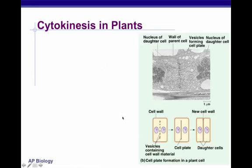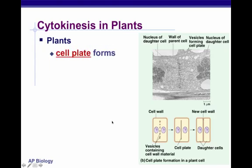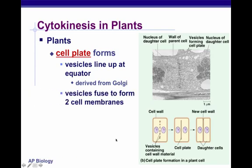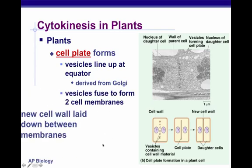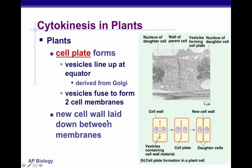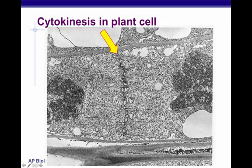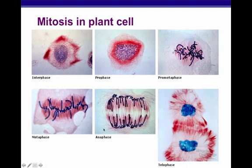Cytokinesis in plants is a little different. Vesicles containing cell wall material start to make a cell plate. When the cell plate stretches all the way across, we end up with two daughter cells. These vesicles line up at the equator and are derived from the Golgi apparatus. The vesicles fuse to form two cell membranes, and a new cell wall is laid down between the membranes, fusing with the existing cell wall.